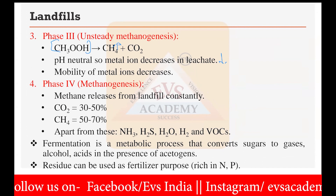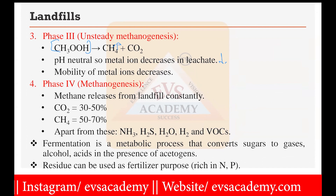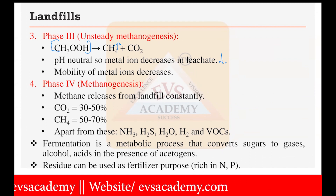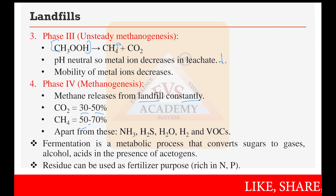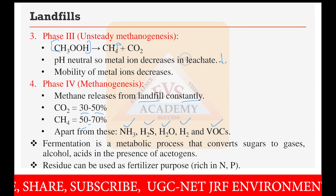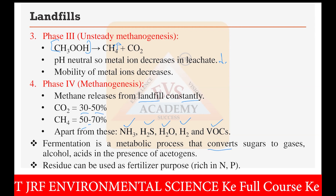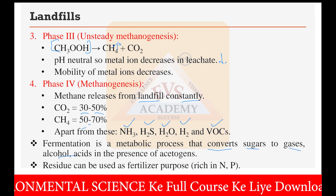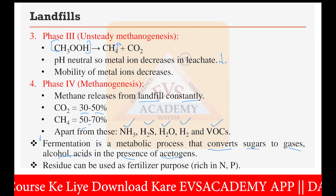In the constant methanogenesis phase, methane reaches the landfill constantly at 50–70%, with CO₂ at 30–50%. Other gases include ammonia, hydrogen sulfide, water vapor, hydrogen, and volatile organic compounds. Fermentation is a metabolic process that converts sugars to gases, alcohol, and acids in the presence of acidogens.